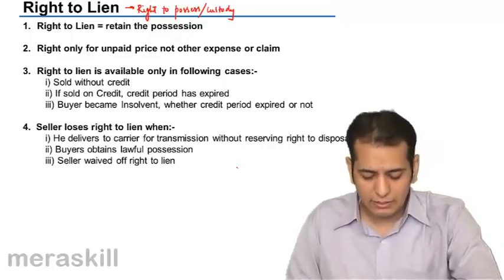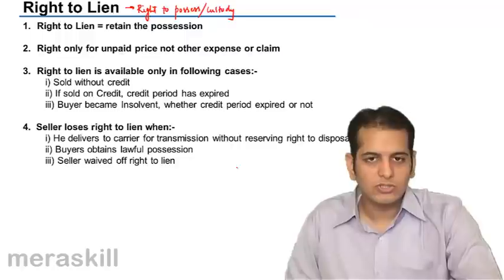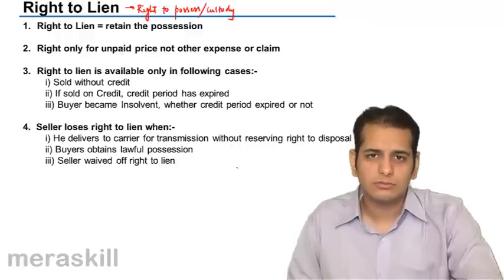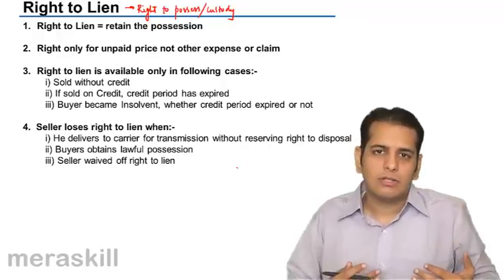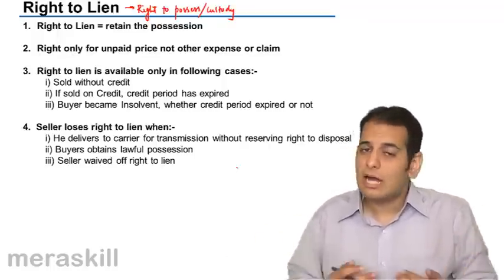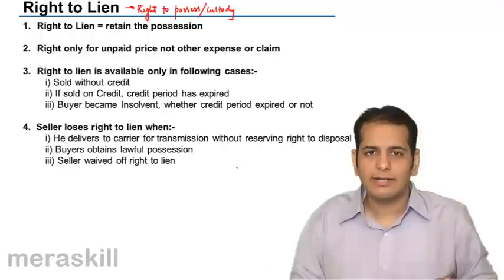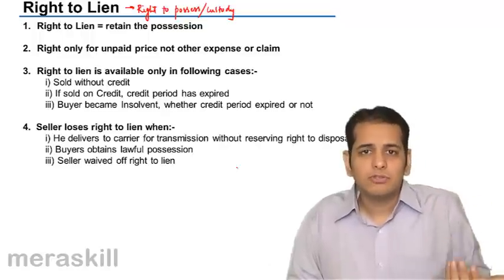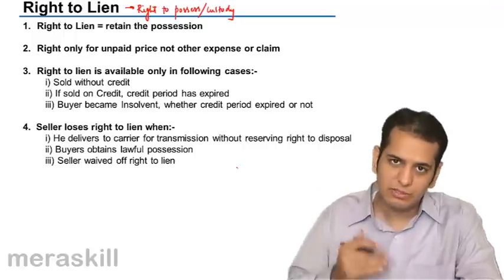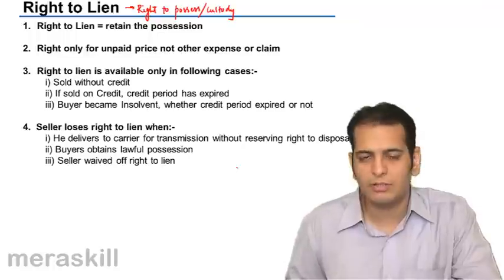The seller also loses the right to lien when he waives it off. The seller may say, 'I will not have the right to lien over the goods,' and waive this right. Since this is a right belonging to the seller, if he says he will not exercise it, he cannot later claim it — he himself has said he will not exercise this right.